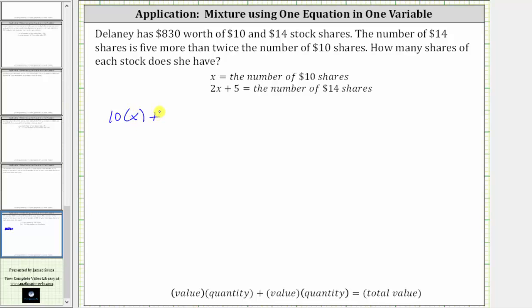And then we have plus the total value of the $14 shares is going to be $14 times the number of shares, which is $14 times the quantity 2x plus 5, which gives us for our equation 14 times the quantity 2x plus 5 must equal the total value of $830.